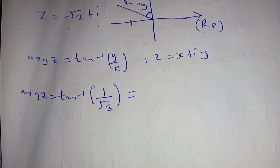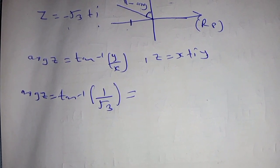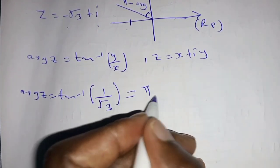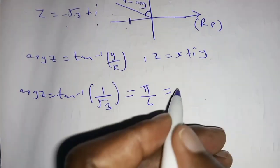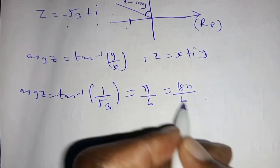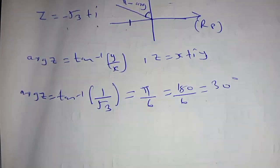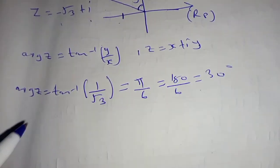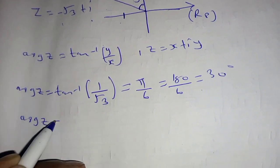So from the calculator, tan inverse 1 over root 3 is going to give you π over 6, which of course if you want, you can write 180 divided by 6, which is the same as 30 degrees. But now from our diagram, from what you are given, our argument is in the second quadrant.